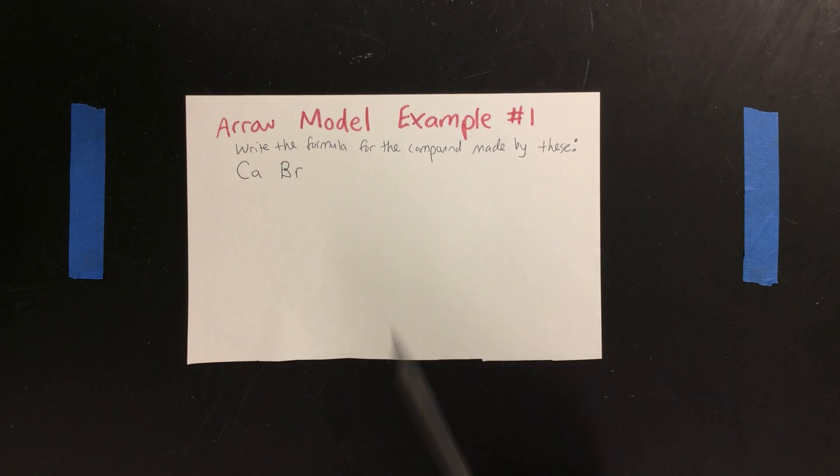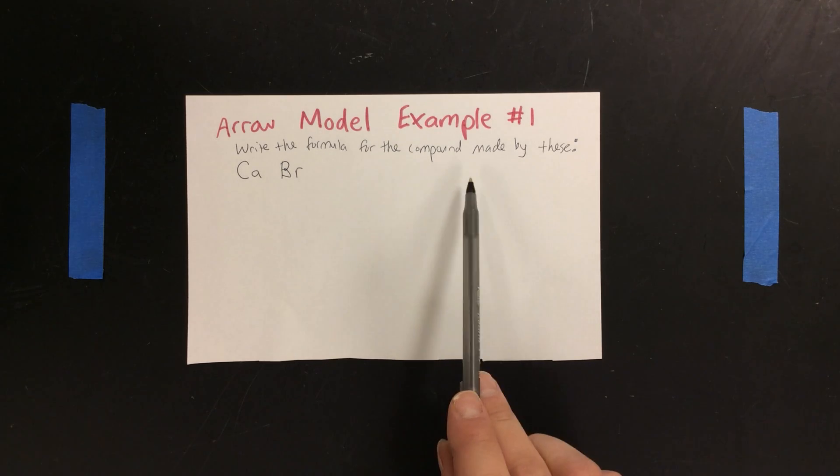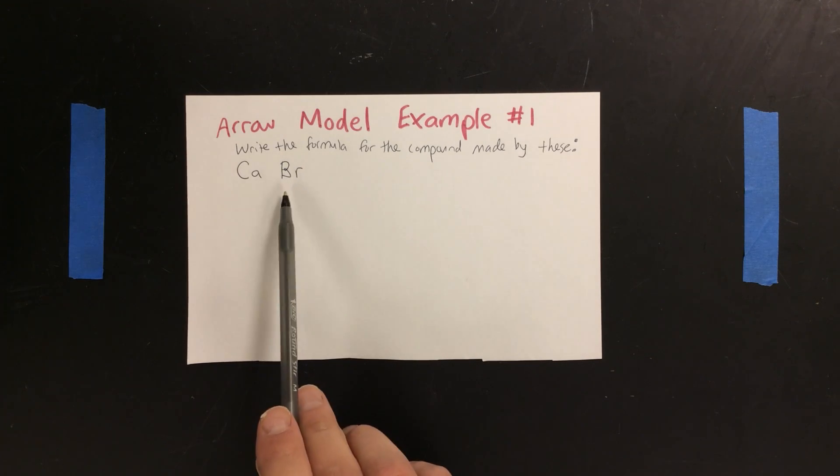So here's the first example. It asks you to write the formula for the compound made by these two elements, calcium and bromine.